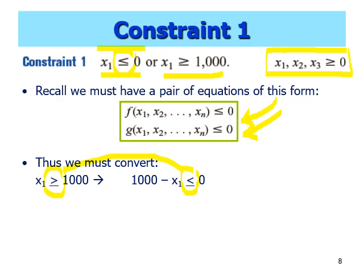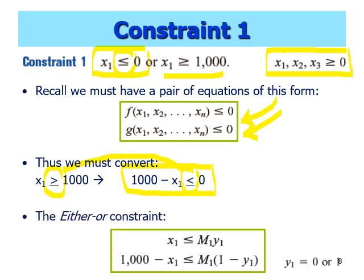Now you have both constraints in less-than-or-equal-to form. Once you have the correct format, all you need to do is change the right-hand side: the first equation becomes M1 times y1, and the second equation becomes M1 times (1 minus y1). The key point is you need to start with the constraints in the correct form before proceeding — once you have the equations in that format, just change the right-hand side accordingly.